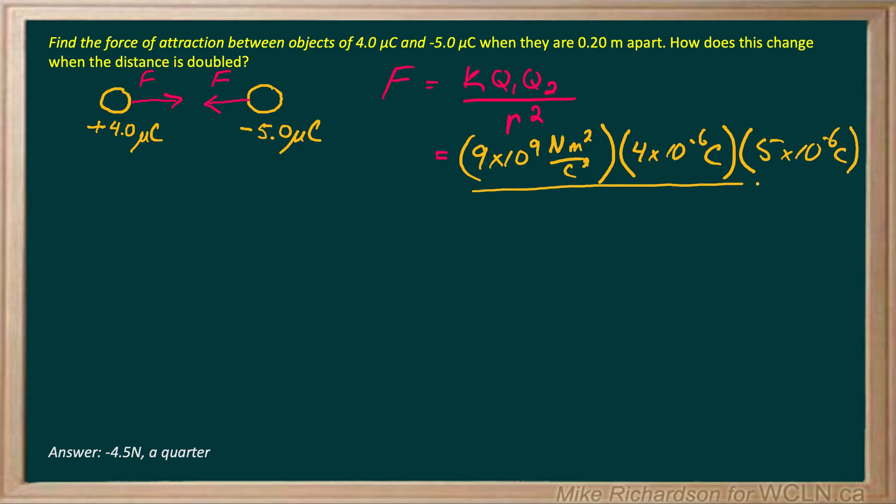Notice I didn't put in negative 5. I've already given it the direction on my picture. And R is 0.2 meters, and it has to be squared.